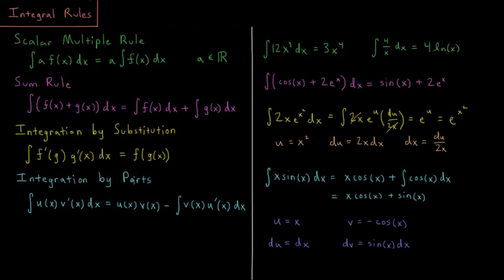You have integration by parts, which is sort of the reverse of the product rule for derivatives. Here we have the integral of u times the derivative of v. This is equal to u times v minus the integral of v times the derivative of u. Or the integral of u dv equals uv minus the integral of v du.